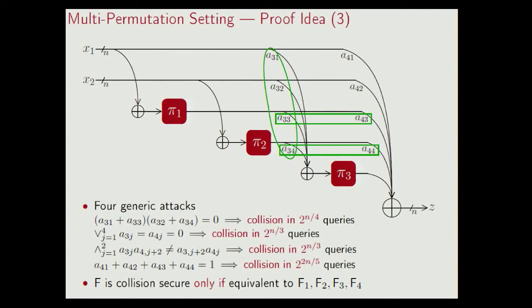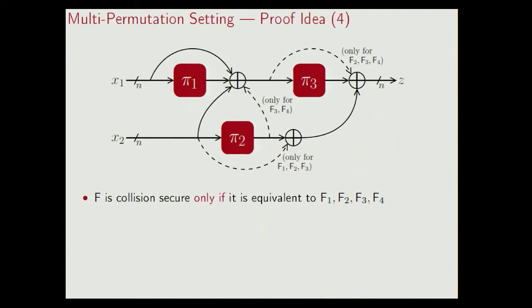So what the result so far means is that if you take any compression function, this function is optimally collision secure only if it is equivalent to one of these four functions. So F is collision secure only if it is equivalent to one of these four functions. This picture contains all of them. What remains, of course, is the if direction and the pre-image security, and this is really the hardest and most technical part of the proof — I will not go into further detail, I will just mention the results.